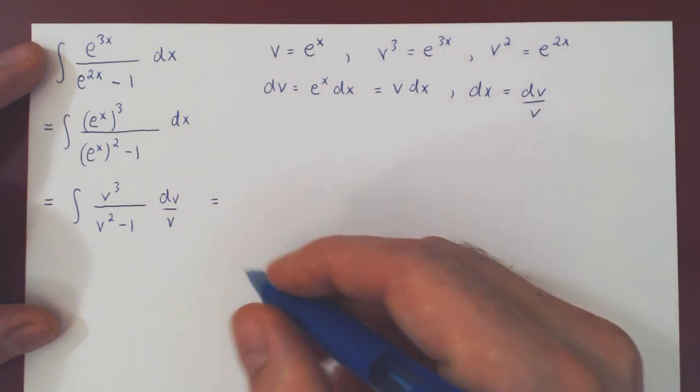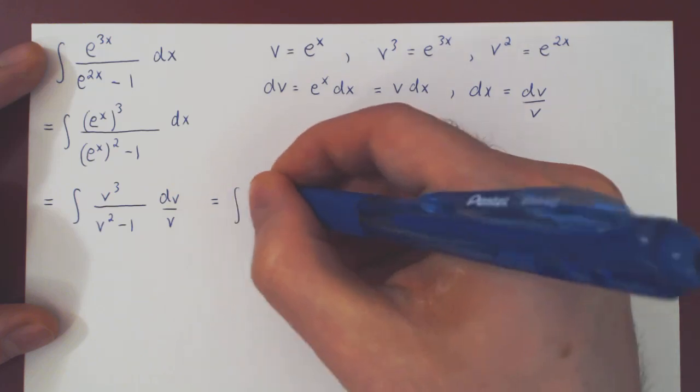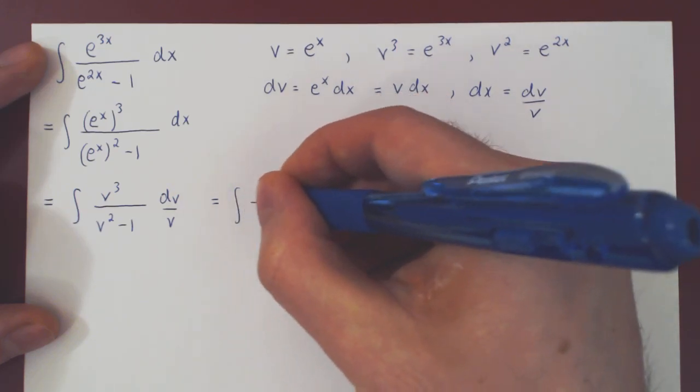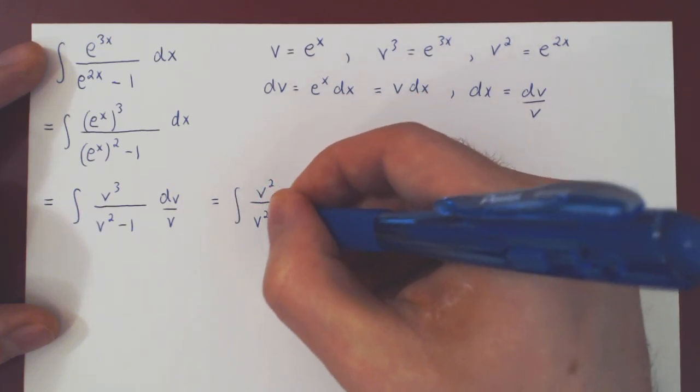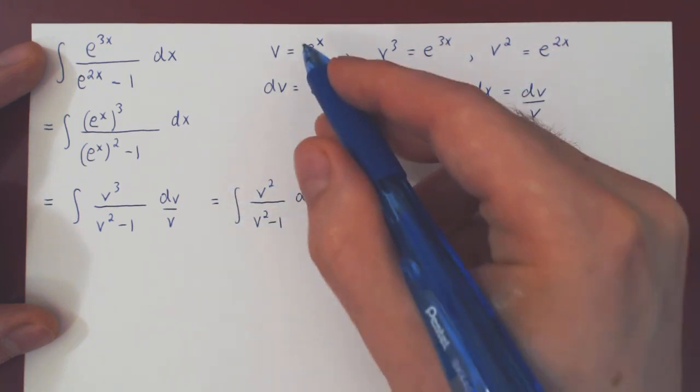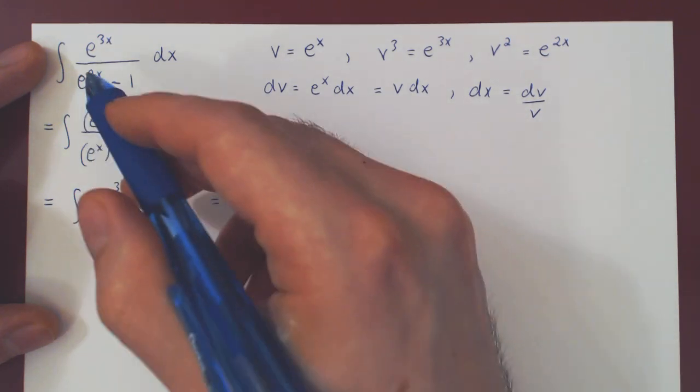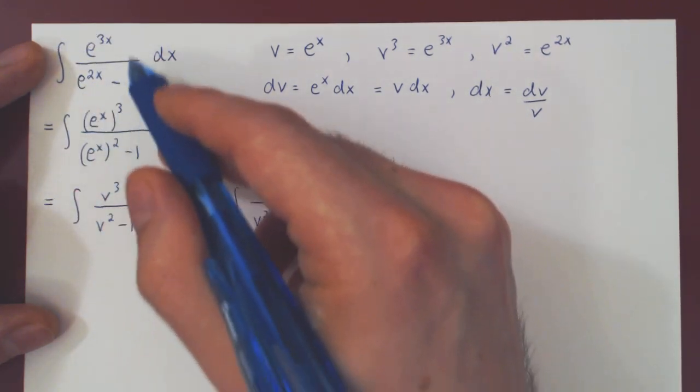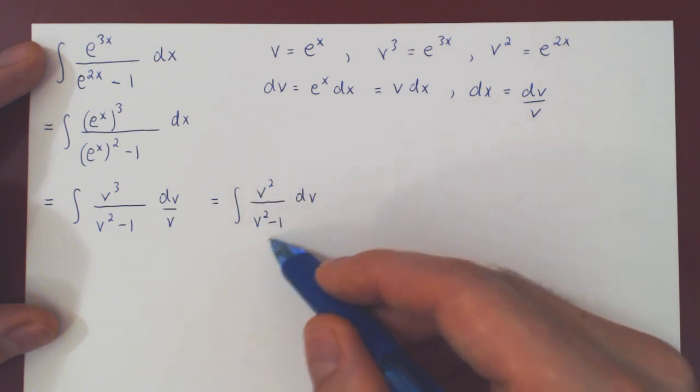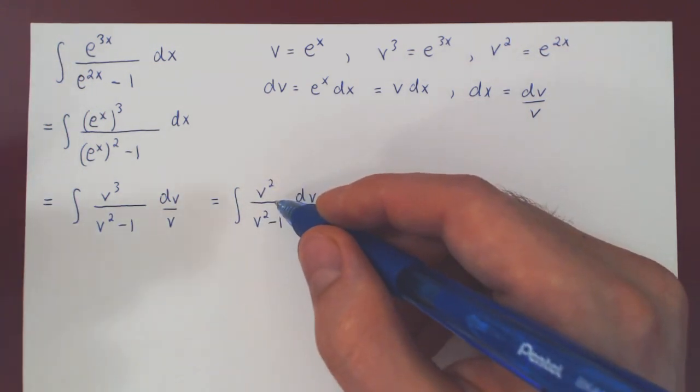Well, we can make one simplification. v cubed over v is v squared. And again we see that our substitution had the desired effect. We went from this integral, which may look intimidating, to one of a simple rational function in terms of v. So now we use of course our method of partial fractions.